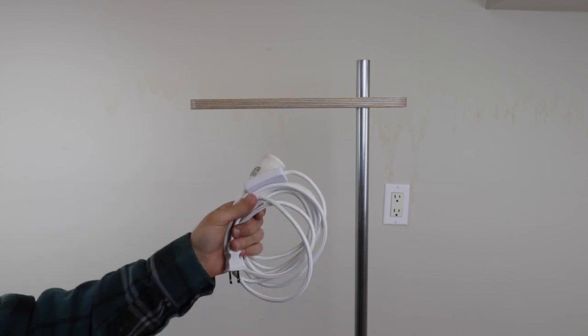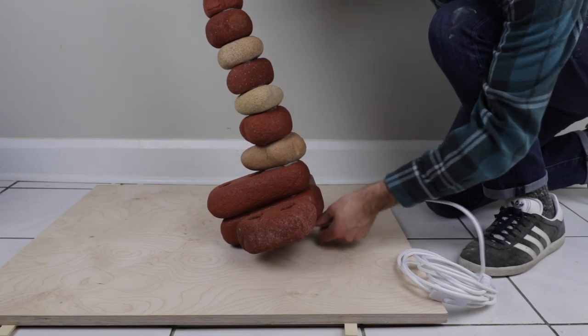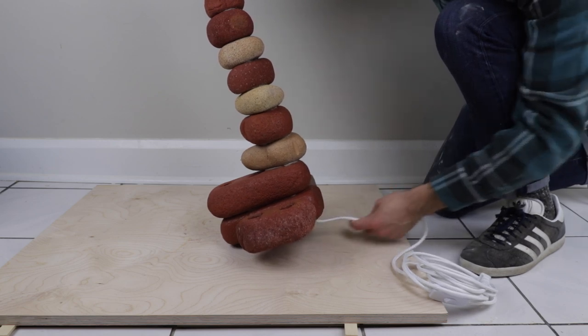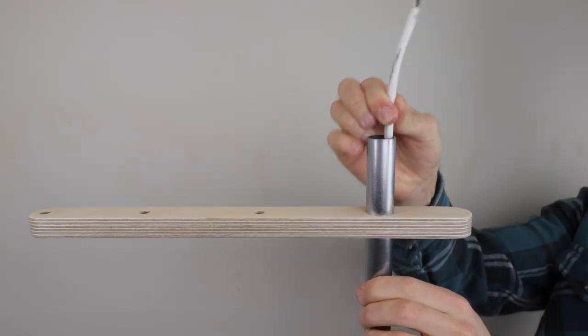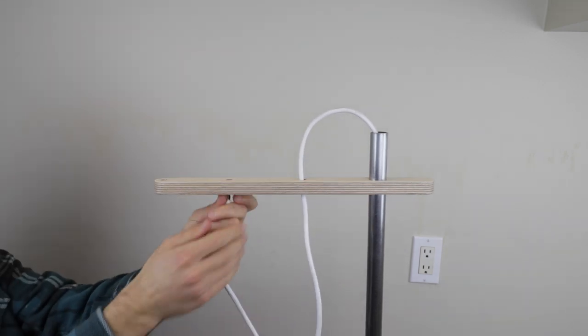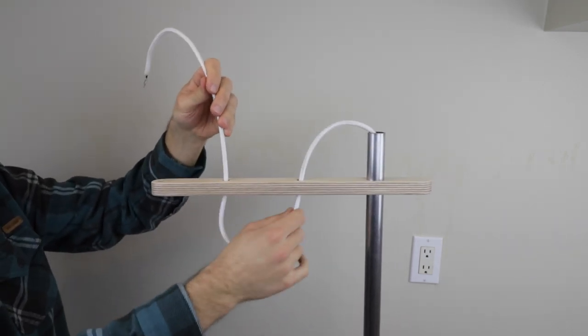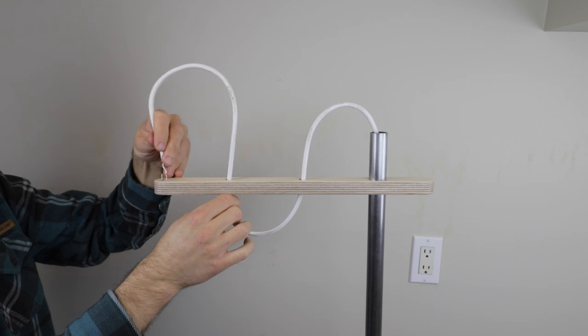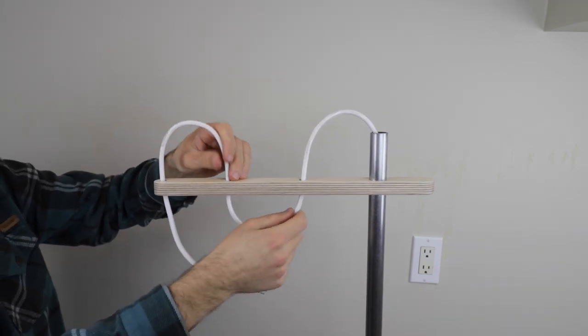With everything cured, I could then install the lamp cord. I started by threading the cord up through the base of the lamp, and pulled it out through the top of the conduit. Then I wove the cord up and down through the holes that I drilled before, and I'm really happy with the result of this woven look. It takes some fine-tuning to get the curves just right, but in the end, I think it's worth it.